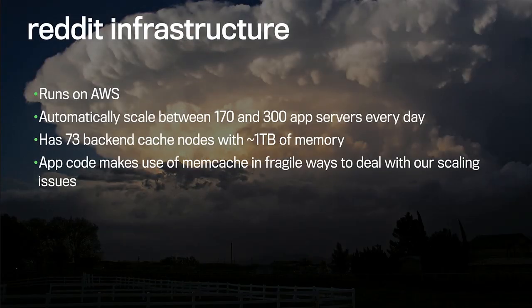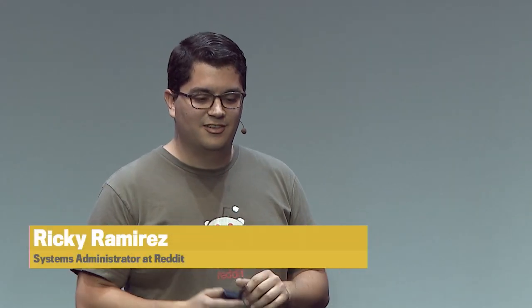Hello, everyone. I'm Ricky Ramirez, one of the operations engineers at Reddit. Let me tell you a little about Reddit's infrastructure. We're all on AWS and automatically scale between 170 and about 300 servers daily — servers going in and out all the time. Those servers are backed by 73 backend cache nodes totaling over one terabyte of memory. The app code is complex and makes use of Memcached in fragile ways — the same problems Facebook and Instagram ran into — we did some code hacks and they're kind of still there.